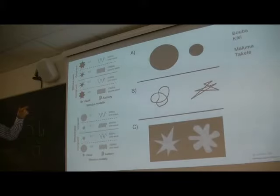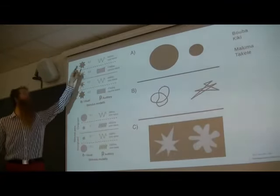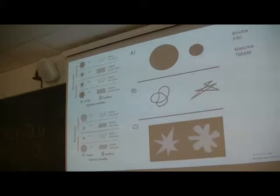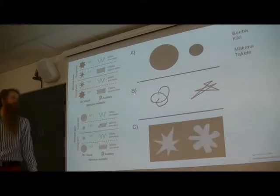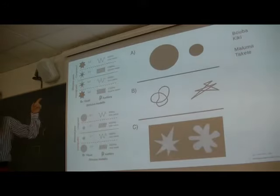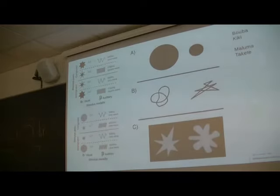In experiments on cross-modal correspondences, they found that more rounded shapes are paired with lower-pitched sounds, and more jagged shapes with higher-pitched sounds. Larger objects are paired with lower pitches, smaller objects with higher pitches. Words like 'bouba' are paired with rounded forms, and 'kiki' with jagged forms — because 'bouba' has more of a low-pitched sound, while 'kiki,' where you stretch your lips out to the sides, has a higher-pitched sound.